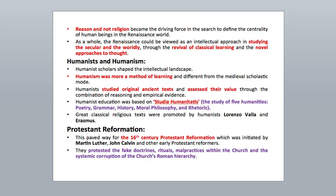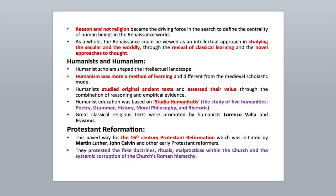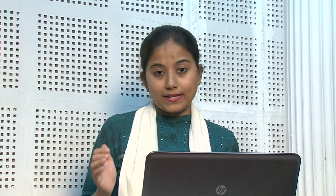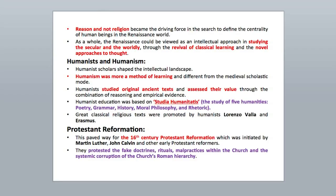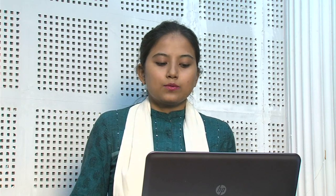This brings us to the subsection on humanists and humanism. Humanism implies that man was given centrality in the Renaissance world. Humanist scholars shaped the intellectual landscape. Humanism was more a method of learning, different from the medieval scholastic mode. Humanists studied original ancient texts and assessed their values through the combination of reason and empirical evidence. The studia humanitatis was formulated as the base for humanist education, with five subjects: poetry, grammar, history, moral philosophy, and rhetoric. The great classical religious texts were promoted by humanists Lorenzo Valla and Erasmus.